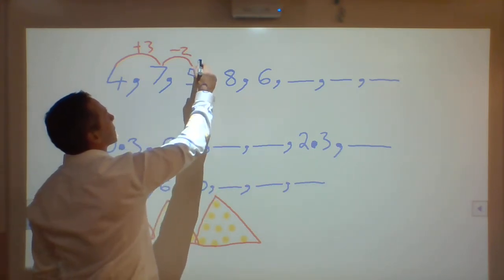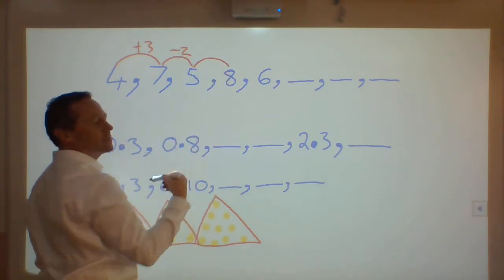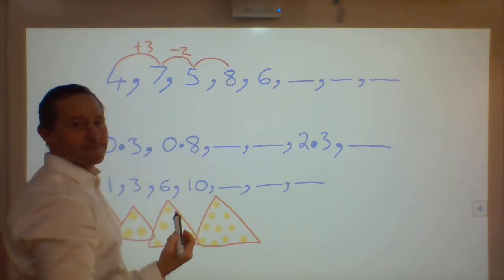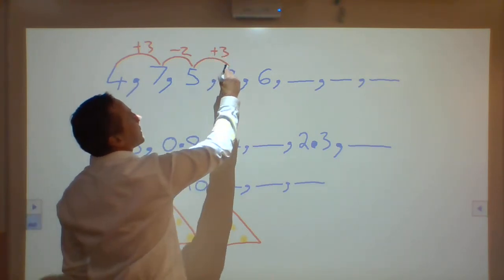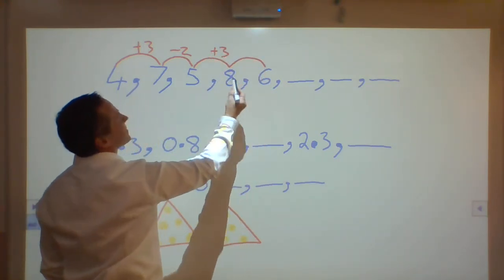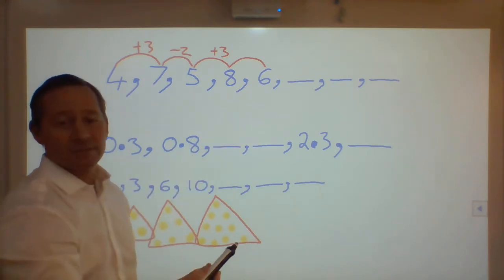Now we're at 5, we've gone to 8, what's happening here? Plus 3. 8 to 6, come backwards, haven't I? Minus 2.